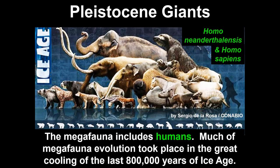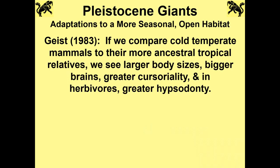Much of the megafauna evolution took place in the great cooling of the last 800,000 years of the Ice Age. Modern humans, Homo sapiens, are three to four hundred thousand years old; Neanderthals are a little older, maybe five or six hundred thousand years old. In 1983, Geist explained all this in a great paper. He stated: if we compare cold-temperate mammals to their more ancestral tropical relatives, we see larger body sizes, bigger brains, greater cursoriality, and in herbivores, greater hypsodonty.